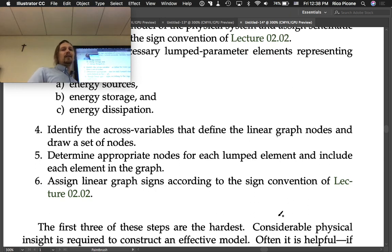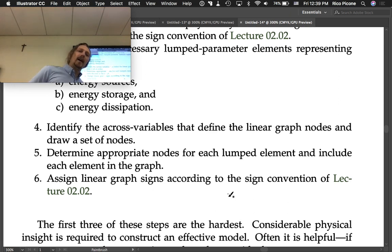Four: identify the across variables that define the linear graph nodes and draw a set of nodes. Five: determine appropriate nodes for each lumped element and include each element in the graph.